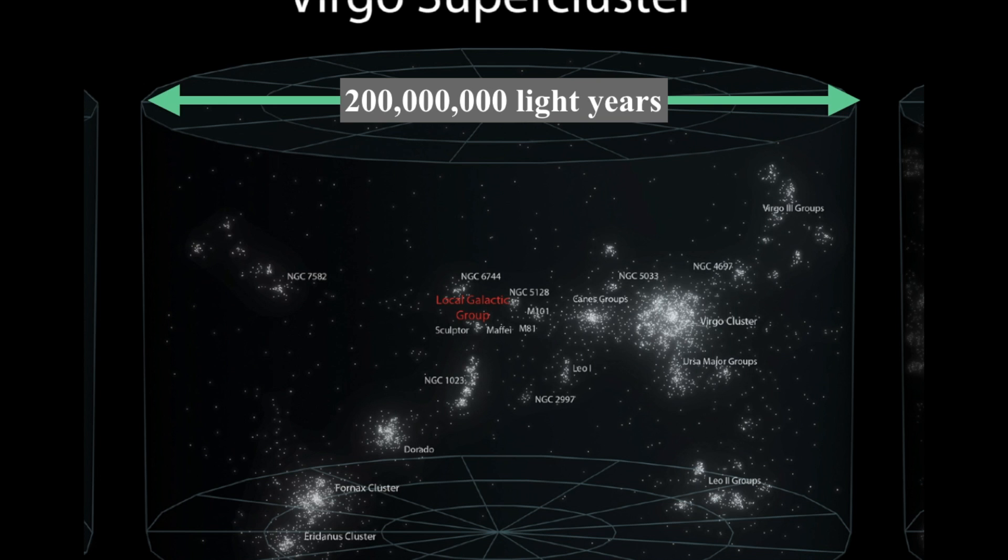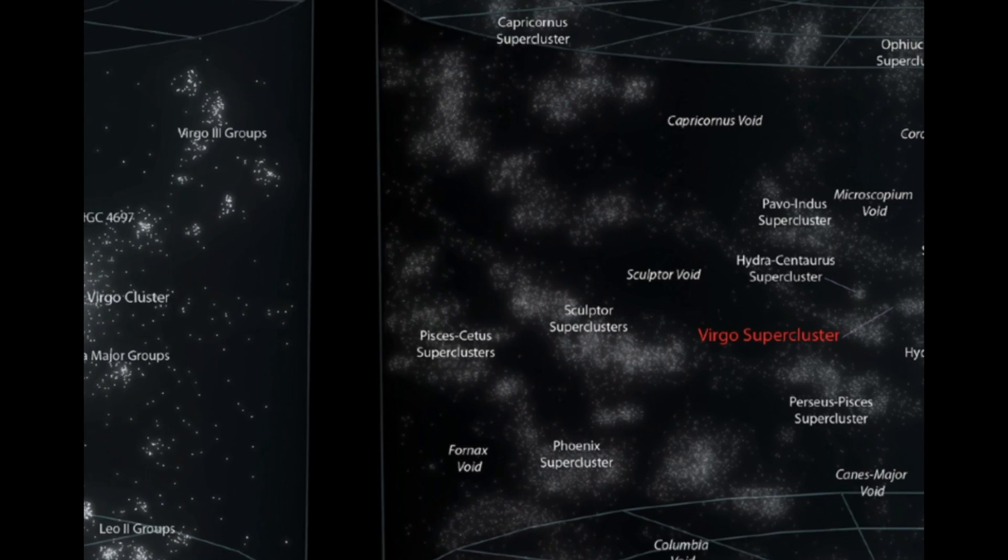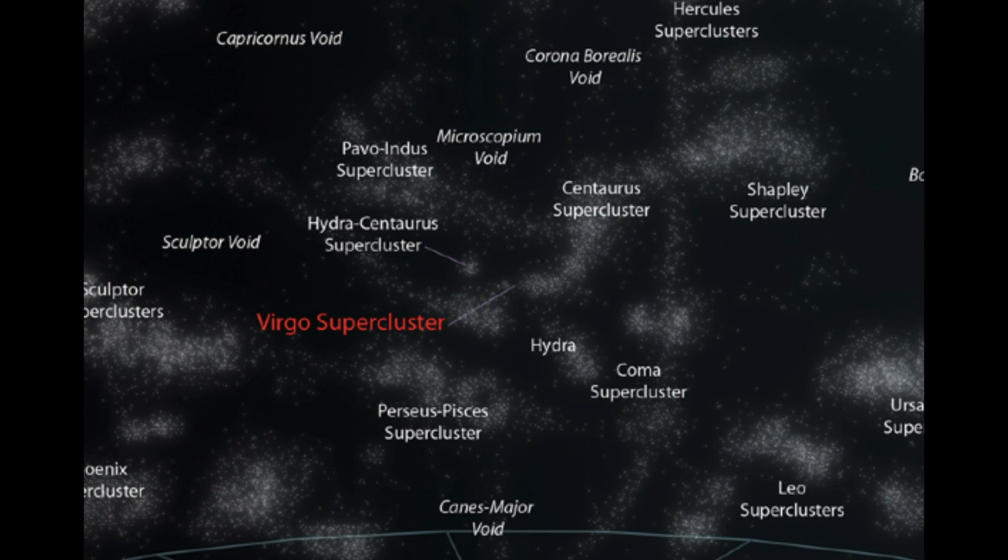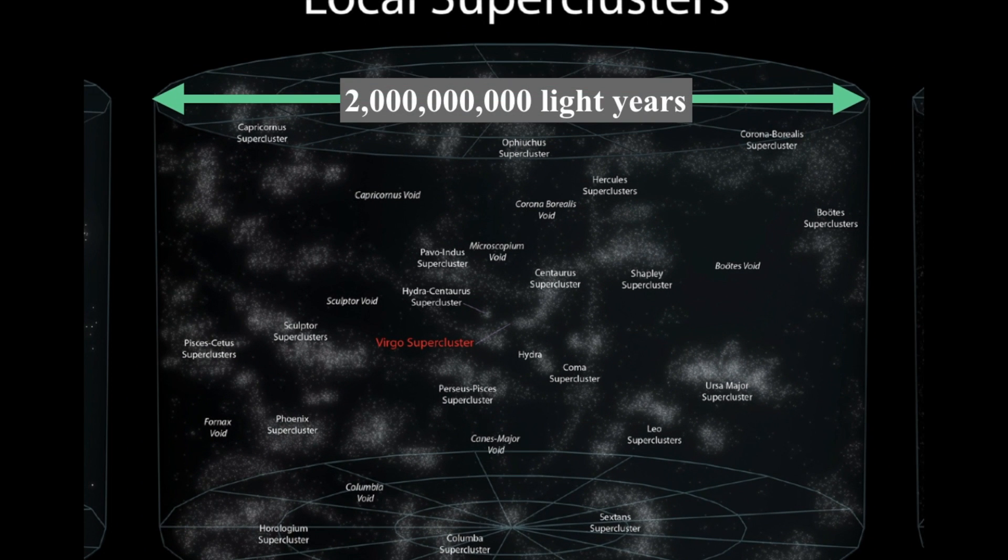Now we zoom out even further and we find the Virgo supercluster is just the spur of another very large supercluster of galaxies. And the local superclusters can be mapped in this way that goes with a diameter of about 2 billion light years. And these are now superclusters of galaxies which give us hundreds of billions of stars. And there is an enormous, vast area.